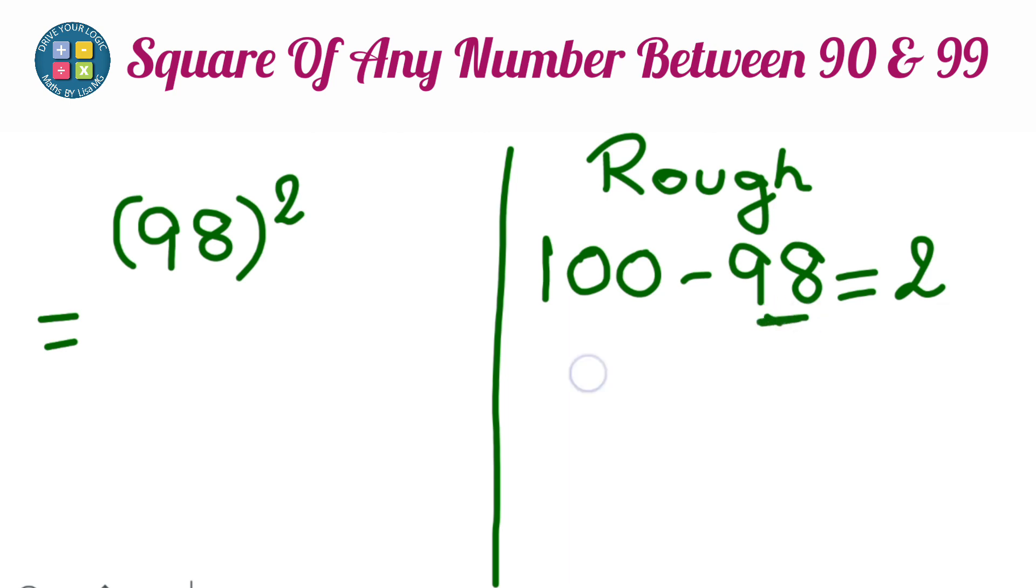This 2 from the given number, you subtract. Once you subtract, you get the number 96. This is the first part of the answer.